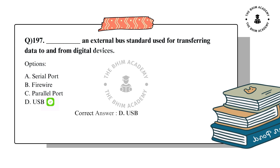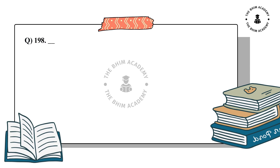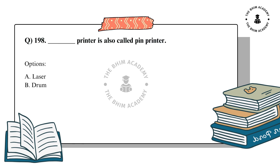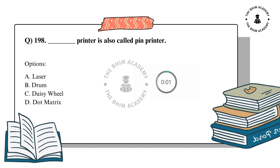Question number 198. Dash printer is also called pin printer. The options are: A. Laser, B. Drum, C. Daisy wheel, D. Dot matrix. The correct answer is D. Dot matrix.